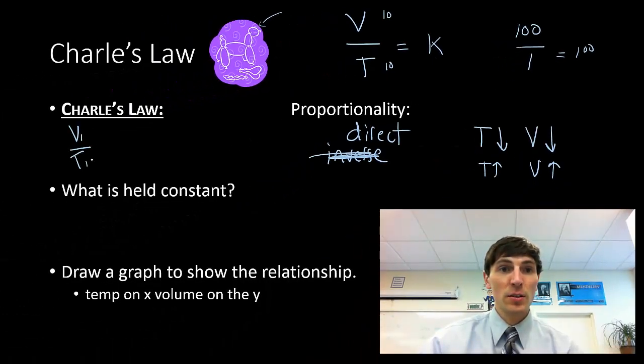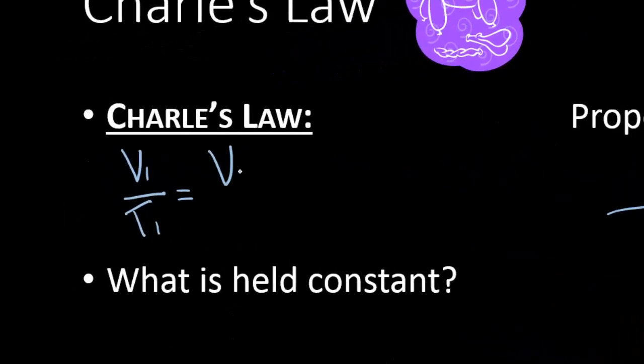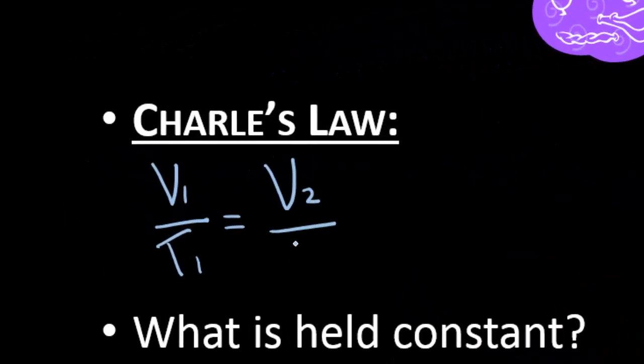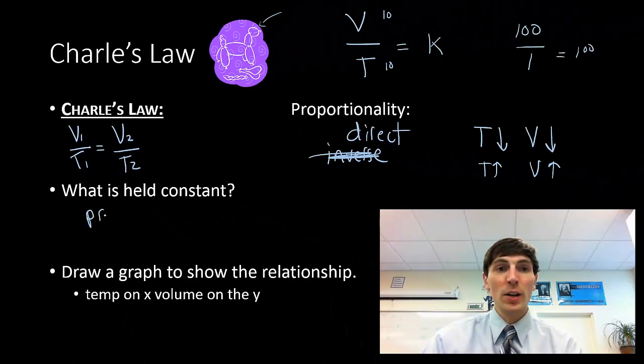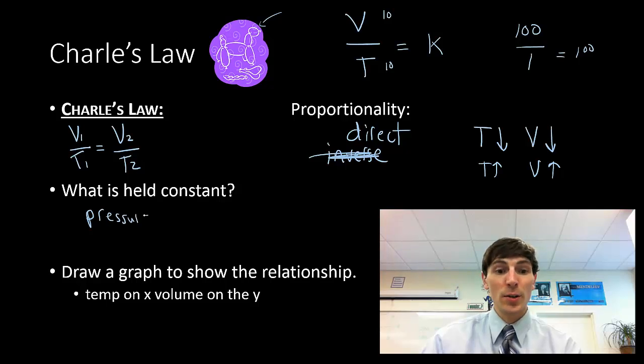When Charles looked at one set of conditions, he noticed that when he changed to some other volume and temperature, those were always going to be equal. This is Charles' law. He had to keep those other variables constant, such as the pressure and the number of moles of gas.